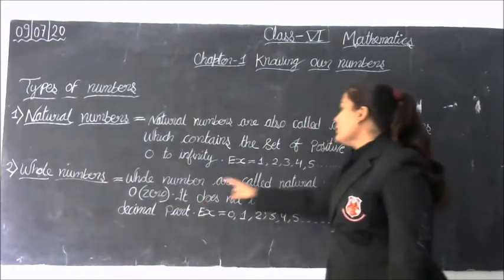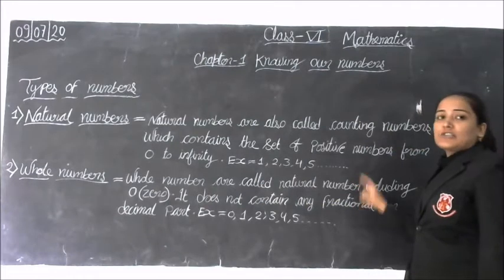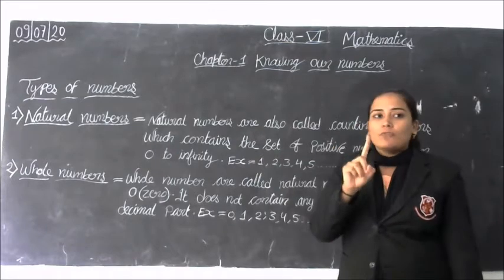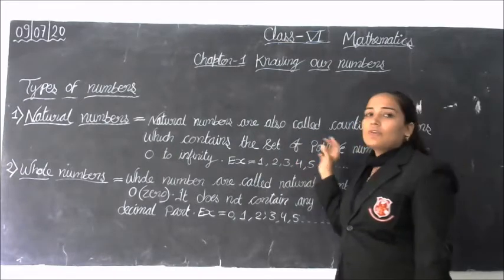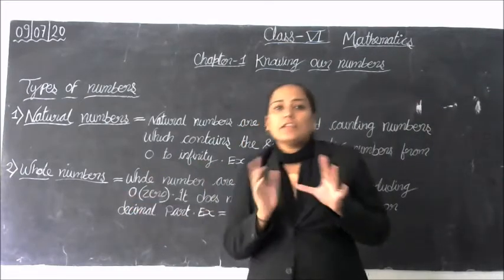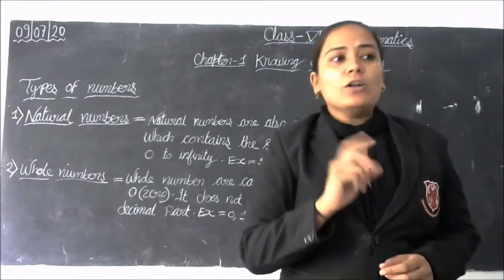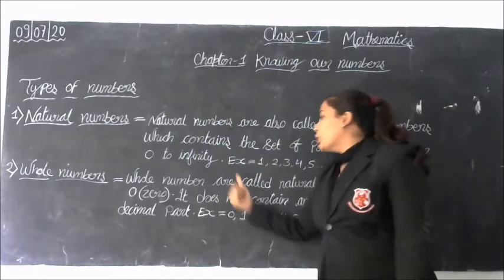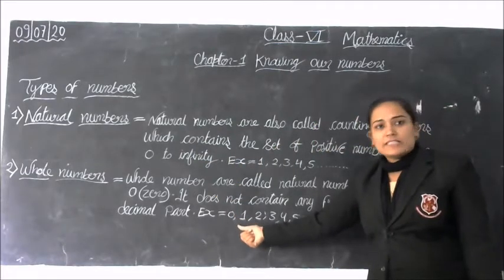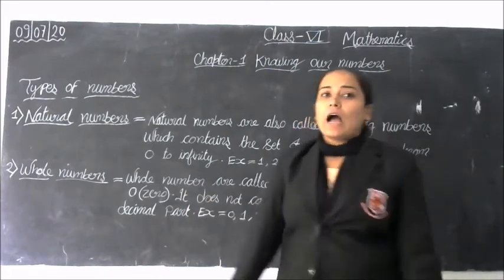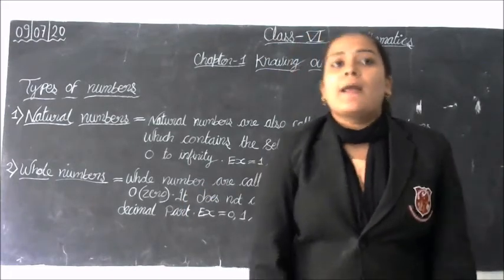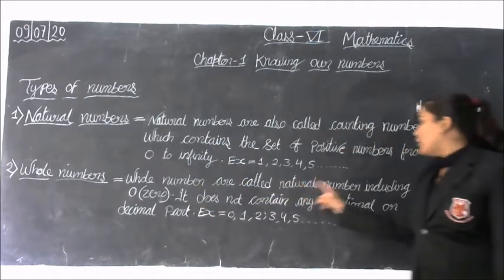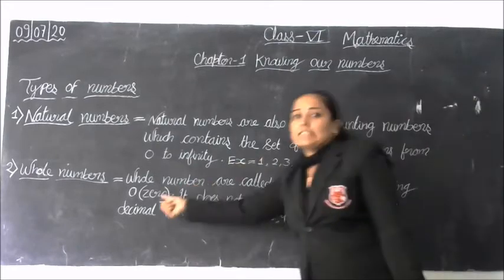Second, whole numbers. Whole numbers are natural numbers including zero. We studied that natural numbers start from 1, 2, 3, 4, 5. The difference between natural numbers and whole numbers is that natural numbers start from 1 and whole numbers start from 0. All whole numbers are not natural numbers, but all natural numbers are whole numbers.